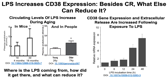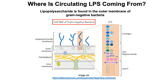So where is this LPS coming from, and what can we do to reduce it? Lipopolysaccharide is found in the outer membrane of gram-negative bacteria. Importantly, I've highlighted two phosphates found in the lipid A portion of the LPS molecule. This is important because I'm going to introduce a protein later on that dephosphorylates it — removing those phosphates — which detoxifies LPS.